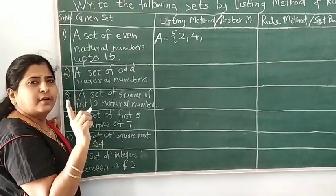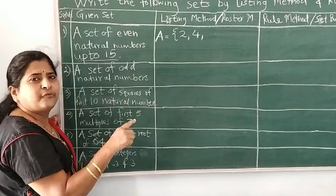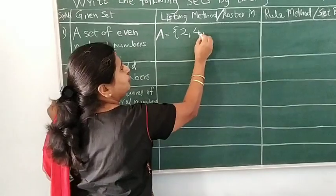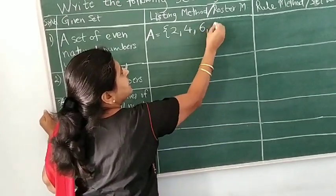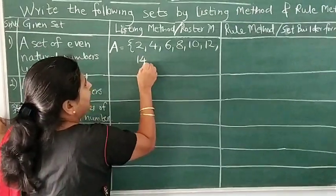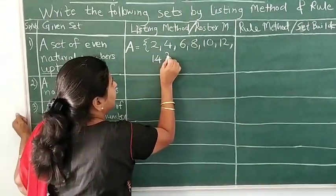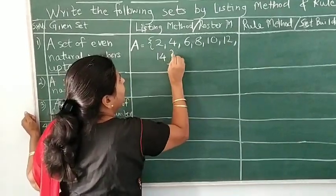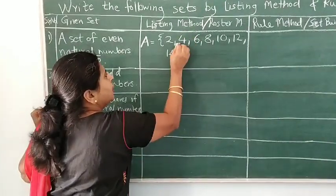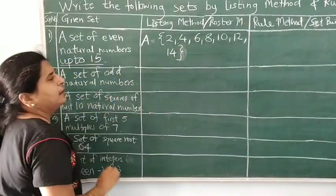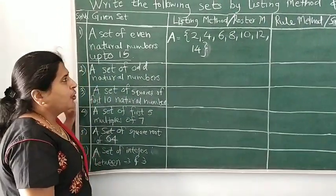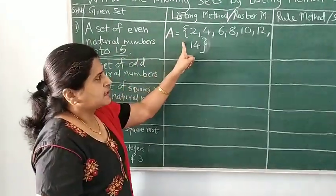Up to 15 — now 15 is an odd number, so the previous even number is 14. So we write these even numbers: 2, 4, 6, 8, 10, 12, and 14. That's the last element, so we use the closing curly bracket. Write the curly bracket symbols properly and nicely. So we have written this set using the listing method.